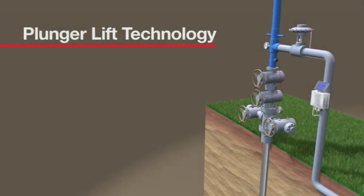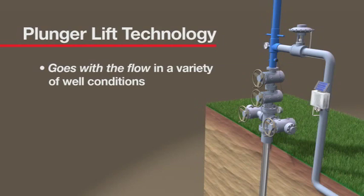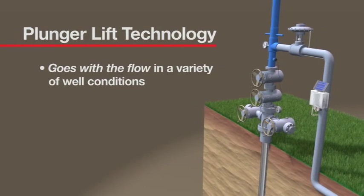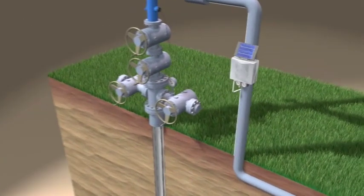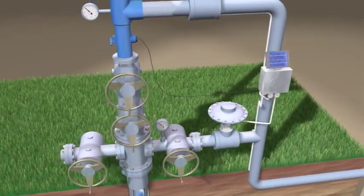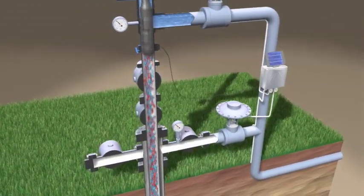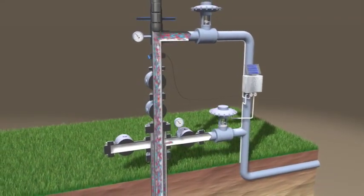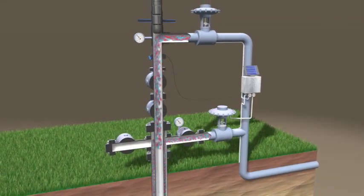Versatile plunger lift technology goes with the flow in a variety of well conditions. For high gas-liquid ratio wells, adding a low-cost motor valve to the annulus can create a cost-effective solution by allowing annular production flow and providing additional drawdown.